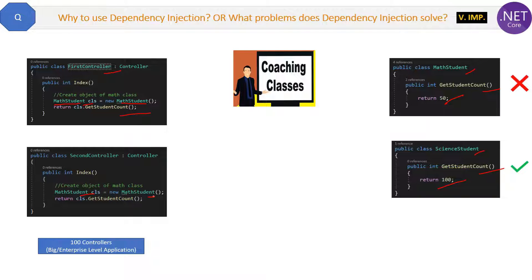That becomes a testing headache. And tomorrow, if there is a new class like a SocialStudies class, you have to do the same level of code changes all over again. That is the problem with the traditional object-creation approach — the testing issues that occur when you create objects directly like this.